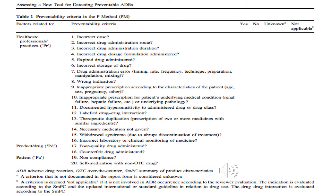A method to detect preventable ADRs is the P method — the preventability method. Based on certain preventability criteria, questions assess whether the healthcare professional gave an incorrect dose, incorrect route of administration, incorrect duration, failed to monitor drug-drug interactions, or failed to notice withdrawal symptoms. Answers are recorded as yes, no, unknown, or not applicable for each condition.